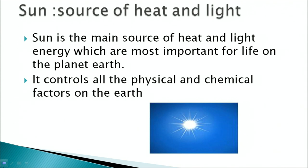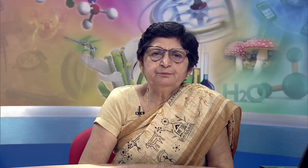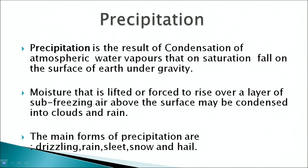The sun is the main source of heat and light energy, which are most important for life on planet Earth, and it controls all physical and chemical factors on earth. Precipitation is the result of condensation of atmospheric water vapors that fall on the earth's surface under gravity. Moisture rises over sub-freezing air and condenses into clouds and rain. The main forms of precipitation are drizzling, rain, sleet, snow, and hail.